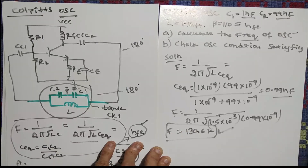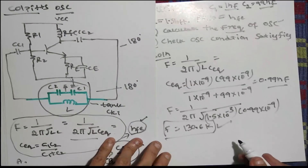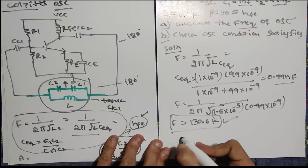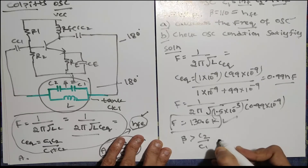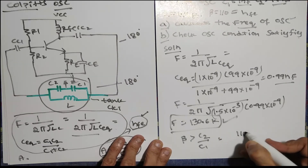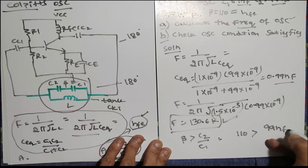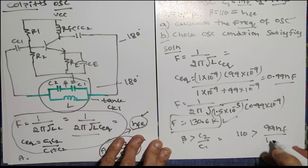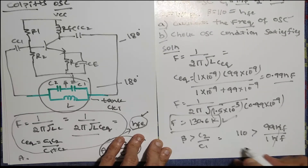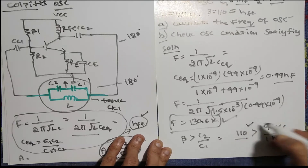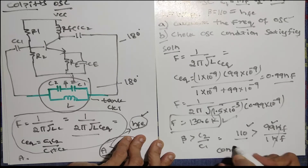Now checking the oscillation condition for the Colpitts problem: beta must be greater than C2 divided by C1. Beta is 110, C2 is 99 nanofarad, C1 is 1 nanofarad. So 110 must be greater than 99 divided by 1, which equals 99. Since 110 is greater than 99, the oscillation condition is satisfied.